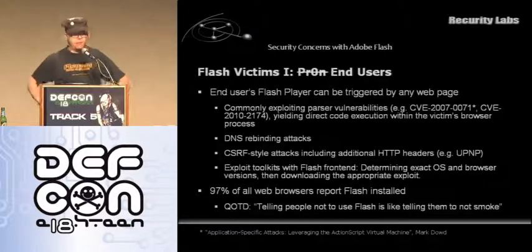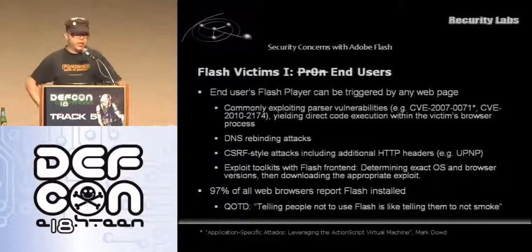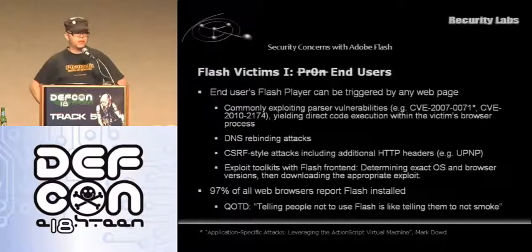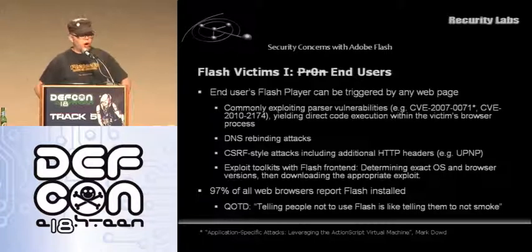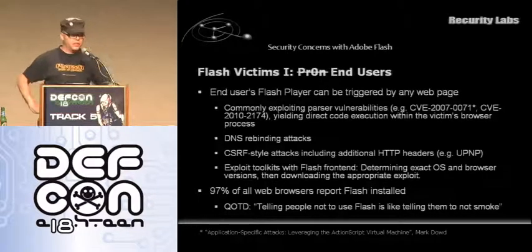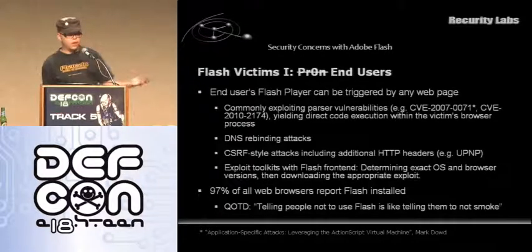The first type of person that has problems is end users — you get owned by surfing porn. What commonly happens is you have a malicious flash file somewhere in the web page, or a malicious flash file is loaded in the background while you're watching porn. Your flash player plugin in the browser gets popped. This is in almost all cases caused by modifying the flash file format so that when it is parsed the parser breaks — integer overflows and buffer overflows. You also have functionality-based attacks like DNS rebinding, CSRF-style attacks where you use flash to speak UPnP to your home router and open a forwarded port, or it is used in exploit toolkits.